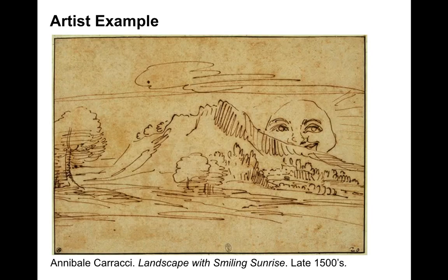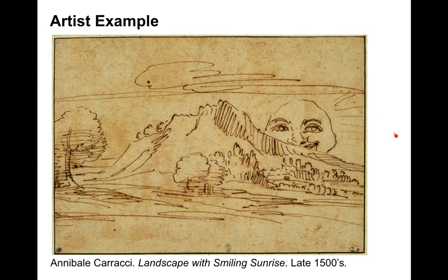My last image is Annabelle Karachi's 'Landscape with Smiling Sunrise' from the late 1500s. This is a female artist working in the late 1500s, which is highly unusual. She has a little sense of humor with a smiling sunrise, and there's excellent use of ribboning in the hills, the ground, and the tree, with nice hatching and fun shapes in the clouds. And that's the end of my lecture — thank you.